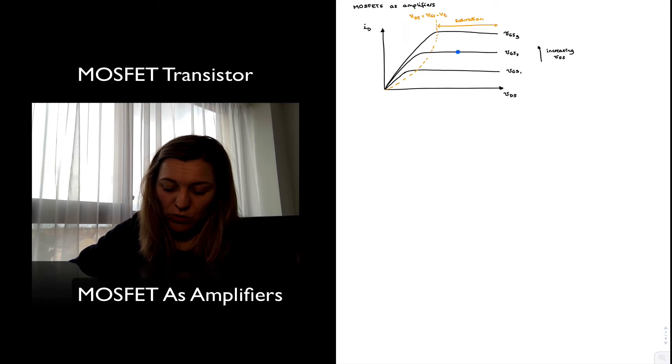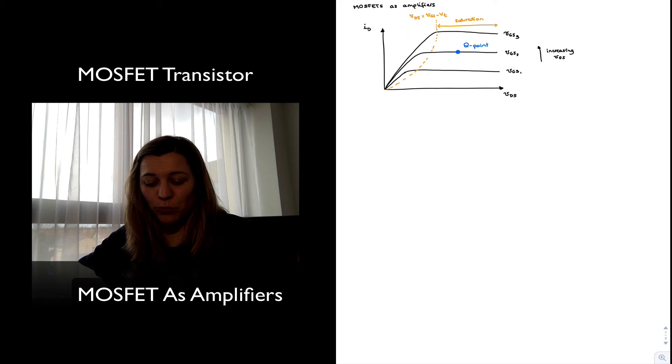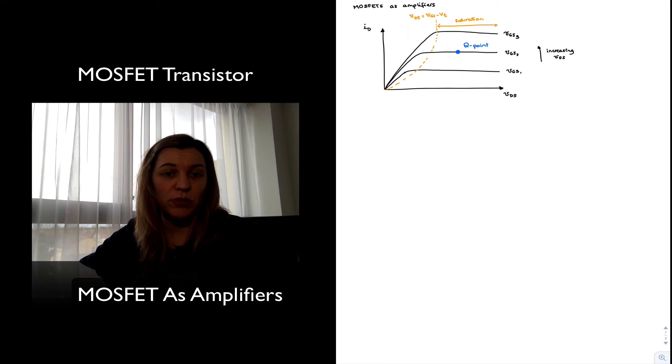I will want that bias point, or Q point, or quiescent point, to be fairly well centered around my saturation region, sufficiently far from the edge of the triode region. Because as I move my input signal around the DC bias point, I don't want my transistor to be coming in and out of saturation. I want it to be right in the middle of saturation region.